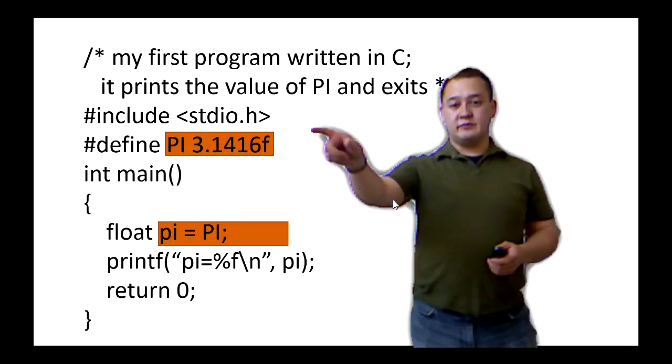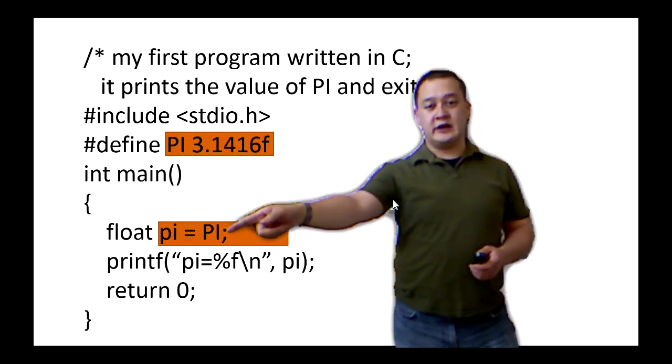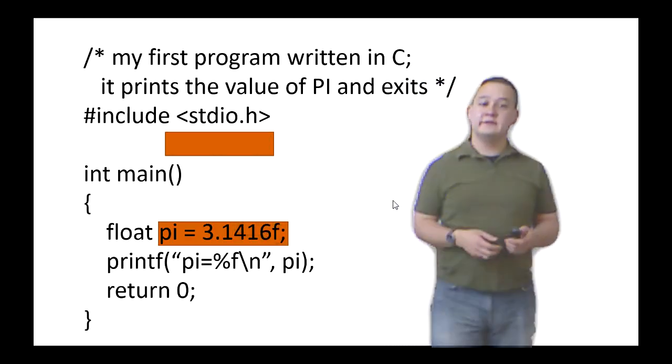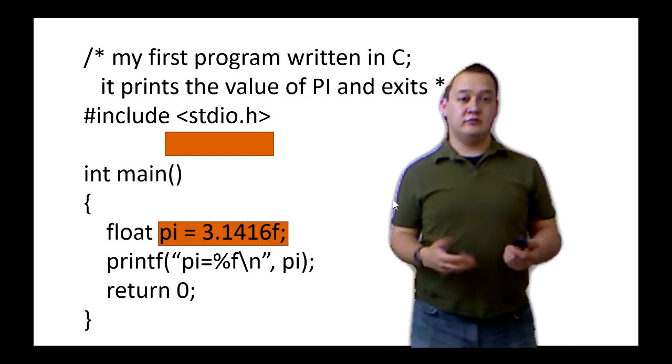And what's going to happen is the preprocessor is going to look through the code and go, oh, hey, here's capital P, capital I. I'm going to replace this capital PI with 3.1416f. And then I'm going to delete my directive. I'm going to take it away so the compiler won't see it.